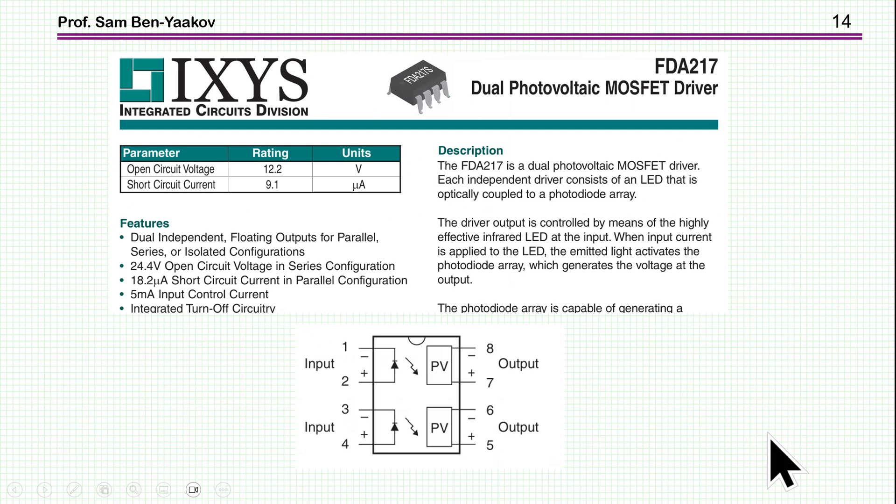There are other companies who are making similar devices, and I brought here another case. This is an IXYS device. This particular device has two units in one package. Not only that, it seems that they have more photodiodes in the array. You see that the open circuit is up to 12 volts. However, the current is lower. So it has a higher voltage, but lower current, and in some cases, it could be okay. In this particular case, there are also two units in one package, and if you wish, you can actually connect them in series, so you'll get up to 24 volts open circuit. I guess this will be for 25 degrees. Remember that with temperature, the voltage is actually dropping.